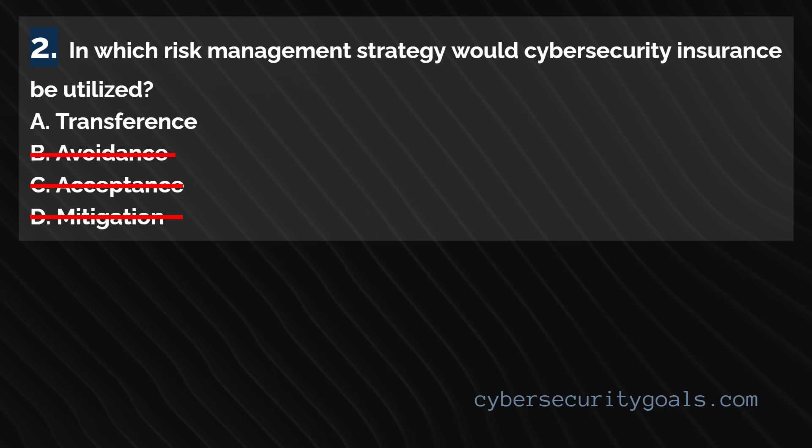The three wrong answers — risk mitigation, risk acceptance, and risk avoidance — focus on managing or eliminating the likelihood or impact of cybersecurity threats. However, they do not directly address the financial consequences of these threats. The correct answer is transference. By purchasing insurance, a business transfers some or all of the financial liabilities associated with data breaches or ransomware attacks to the insurance provider. The company still needs to implement cybersecurity measures, but the financial burden of a security incident is partially or fully transferred to the insurer.